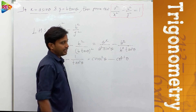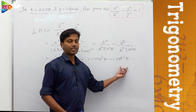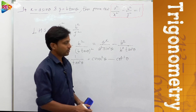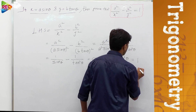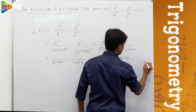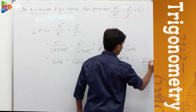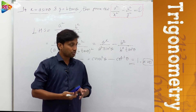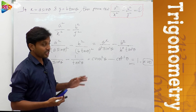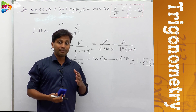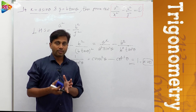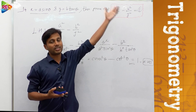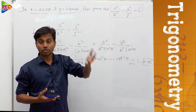You might have identified this is the trigonometric identity cosec²θ minus cot²θ, and the value of that is 1. So the value of this is 1 — we obtained the RHS. Like this, we can prove it. This is a very simple and important model of problem.